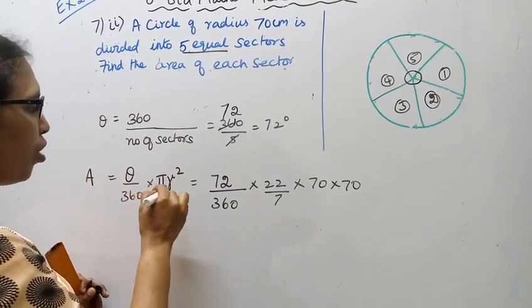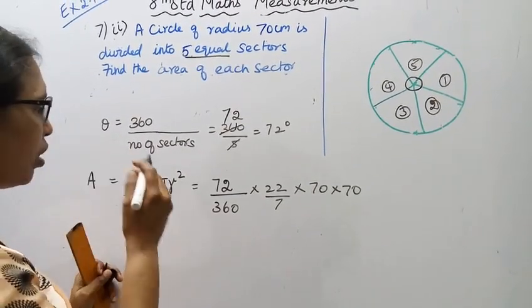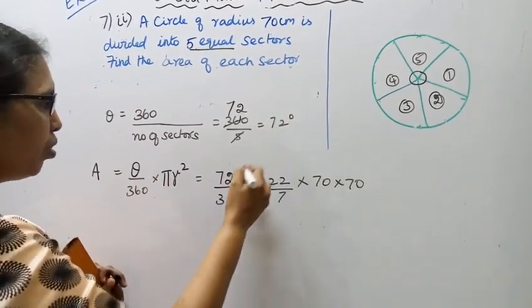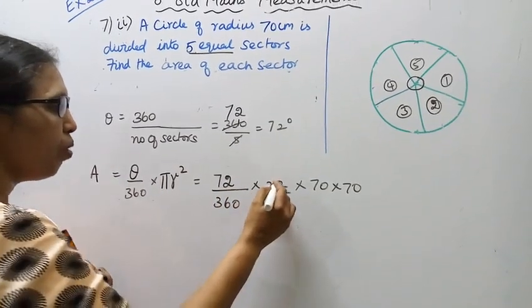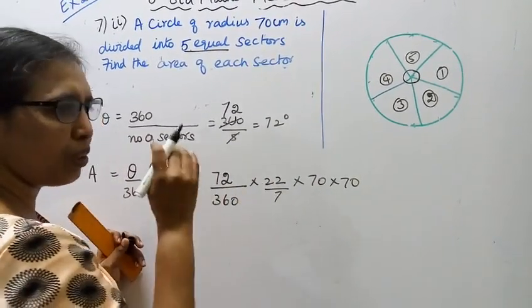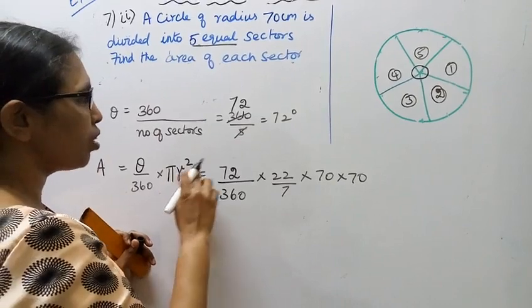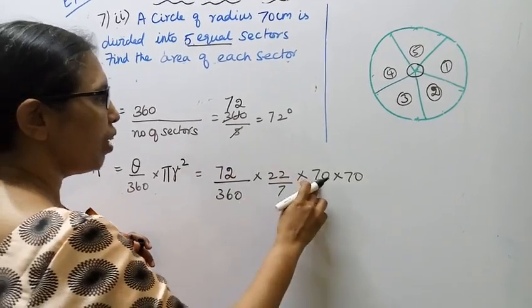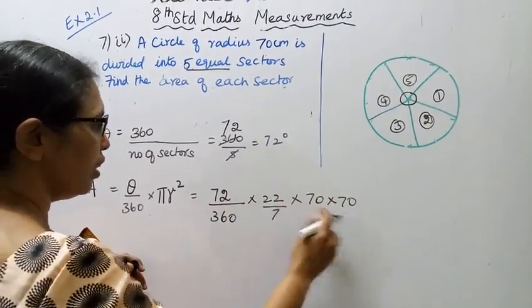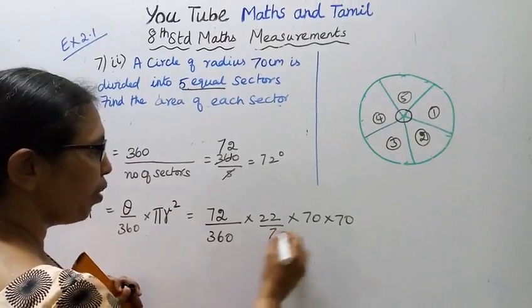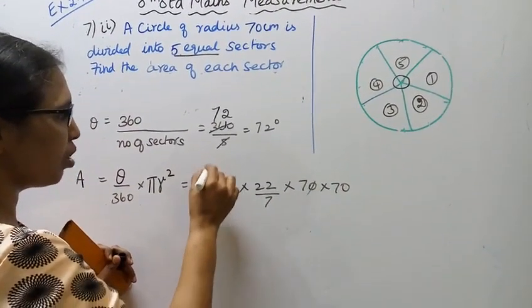The area of the sector formula is: (theta / 360) × π × r². Substituting the values: theta is 72, so 72 divided by 360, into pi (22/7), and r equals 70. So we have 72/360 × 22/7 × 70 × 70. We can cancel terms: 360 and 72 cancel.